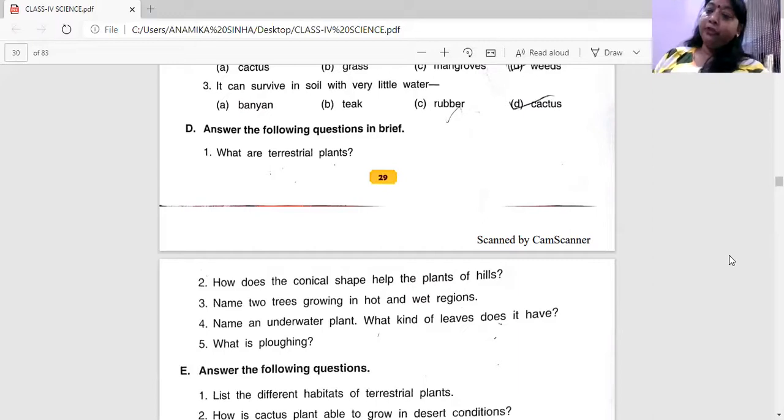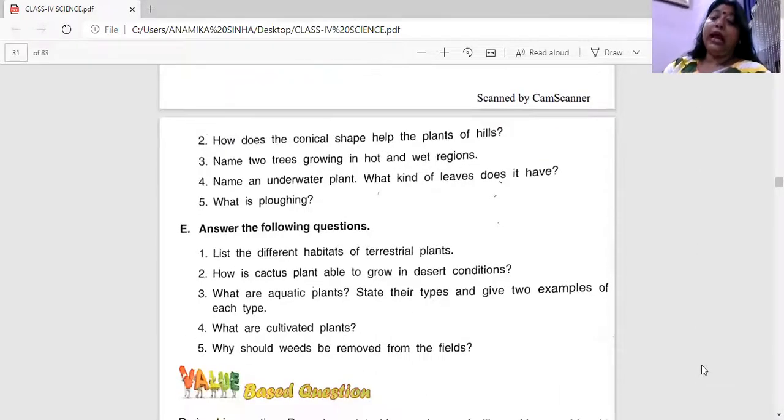So this was all about the small portions, the short portions, the longer ones. Habitats of terrestrial plants. You have to make a list of different habitats. So there is a list of different habitats. Plants of the hills. Let's give two examples.